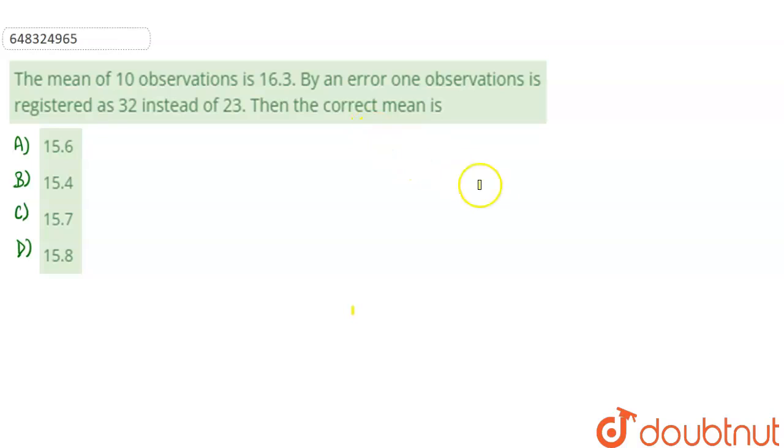us. The mean of 10 observations is 16.3. By an error, one observation is registered as 32 instead of 23. We need to find the correct mean. Four options are given to us. We have to choose the correct answer, so let us proceed